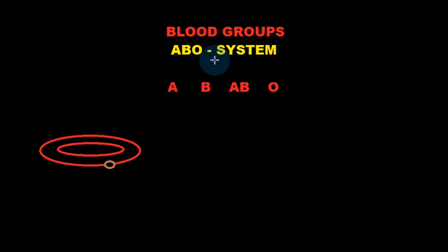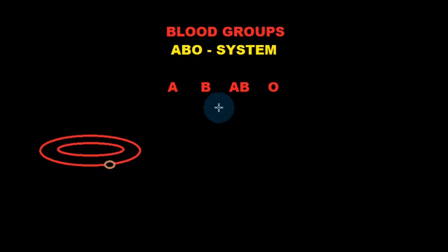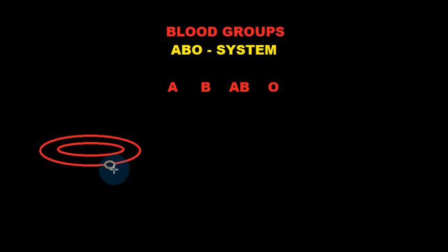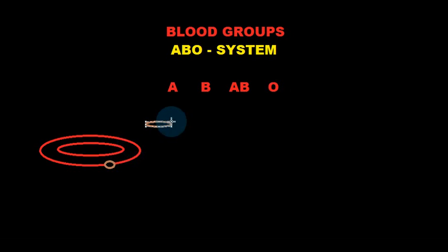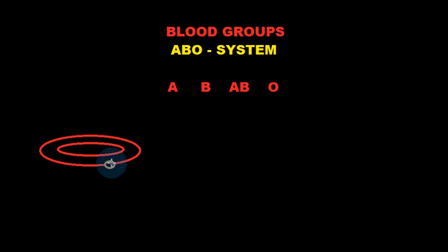If a person is blood group A, this means that they have antigen A on the cell surface of the red blood cells. If a person is blood group B, this means they have the B antigen on the cell surface of the erythrocytes. People who are blood group AB have both A antigens and B antigens on the cell surface of the red blood cells. People who are blood group O don't have antigen A or antigen B on the cell surface of the red blood cells, but they have different antigens.